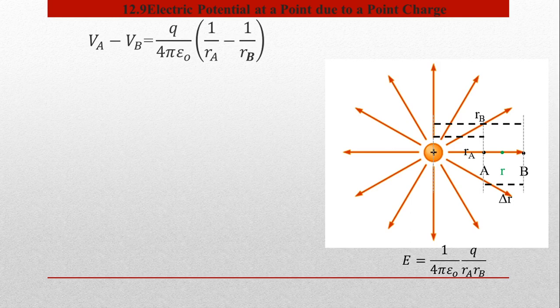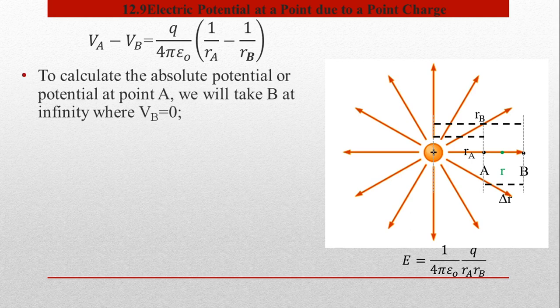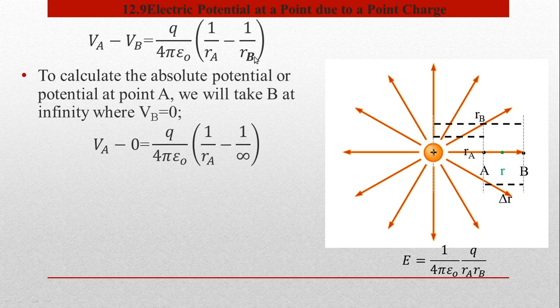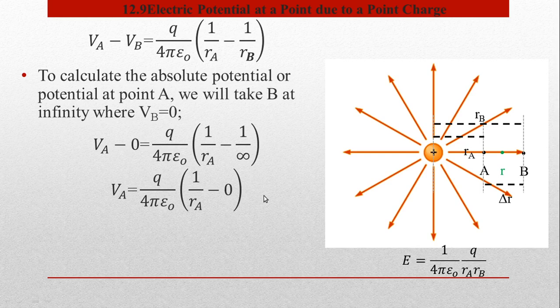ہم نے properly potential difference find کر لیا دو points کے درمیان۔ اب چونکہ ہمارا topic ہے electric potential at a point، اس لیے ہم نے ایک point پر find کرنا ہے۔ جب electric potential ایک point پر find کرنا ہو تو reference point کو infinite پر لیتے ہیں تاکہ اس point پر potential zero ہو۔ لہٰذا یہاں B کو infinity پر consider کریں گے تاکہ V_B = 0 ہو جائے۔ 1/infinity = 0 ہوتا ہے کیونکہ ایک چھوٹے نمبر کو بہت بڑے نمبر سے divide کریں تو approximately zero آتا ہے۔